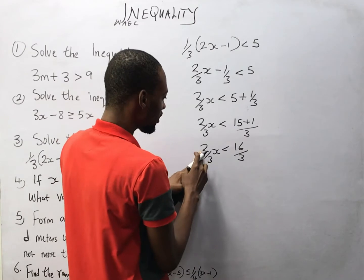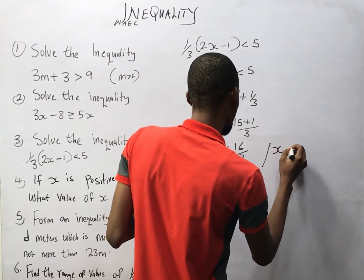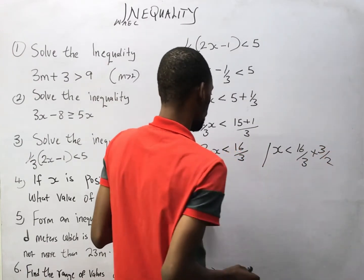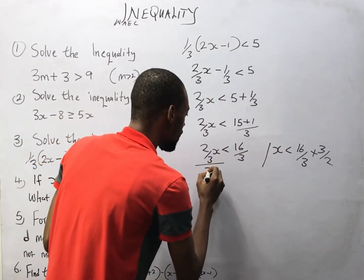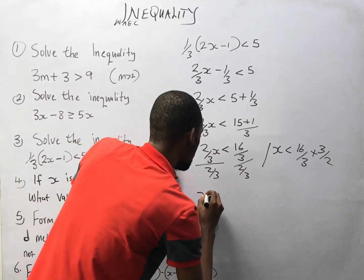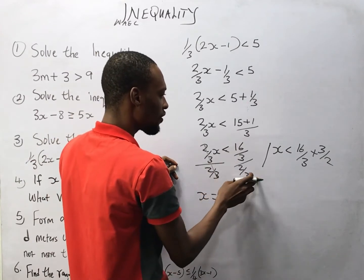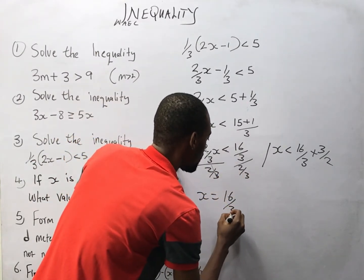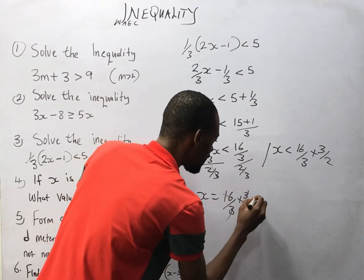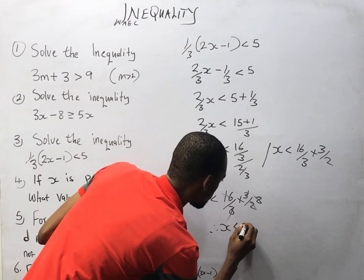So 2 over 3s is lesser than 16 over 3. Now we take 2 over 3 to the other side: s is lesser than 16 over 3 times 3 over 2, which is the same as dividing both sides by 2 over 3. The 3s cancel, and 16 divided by 2 is 8. Therefore, s is lesser than 8. That is the solution to this inequality.